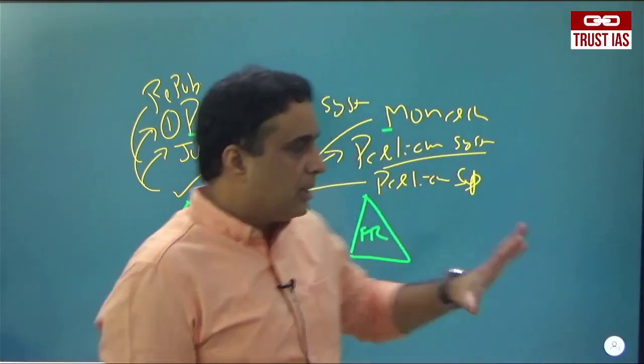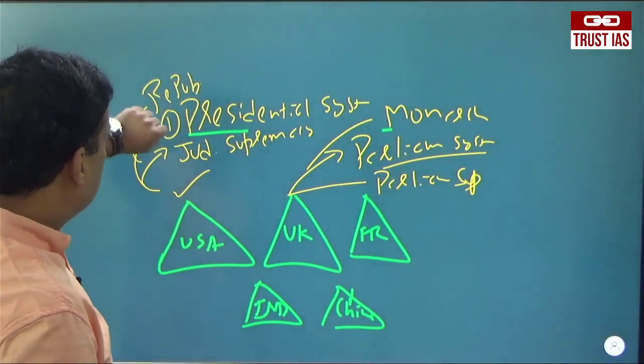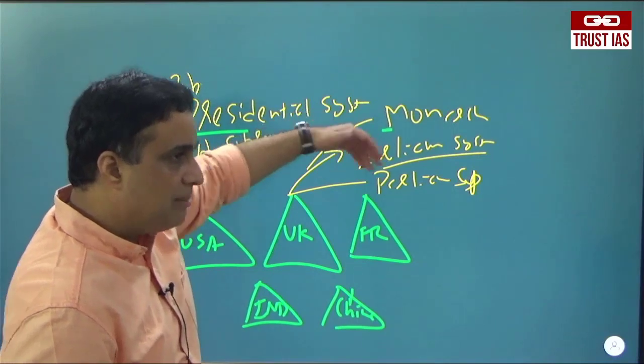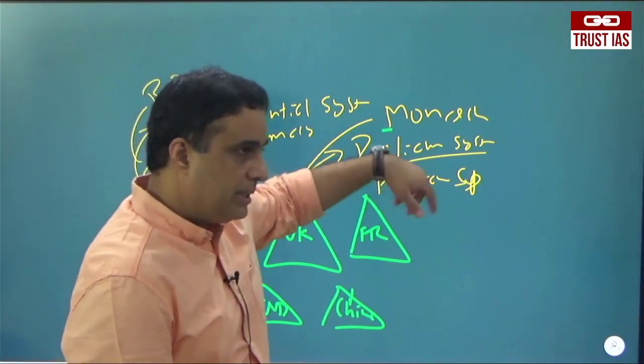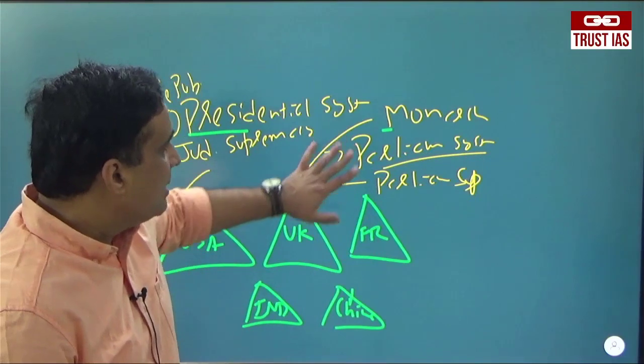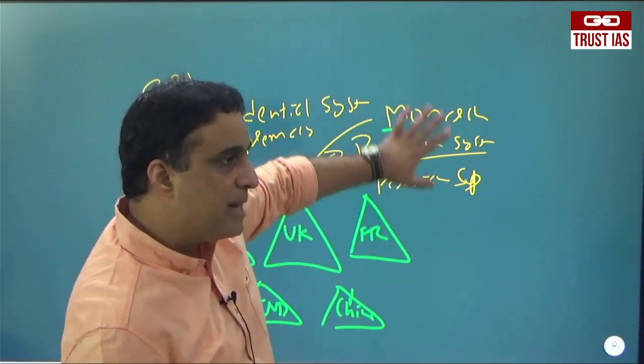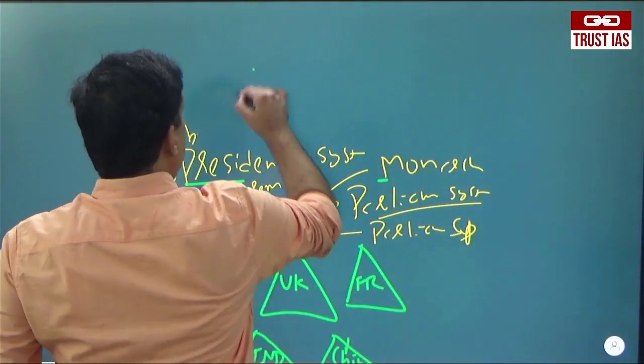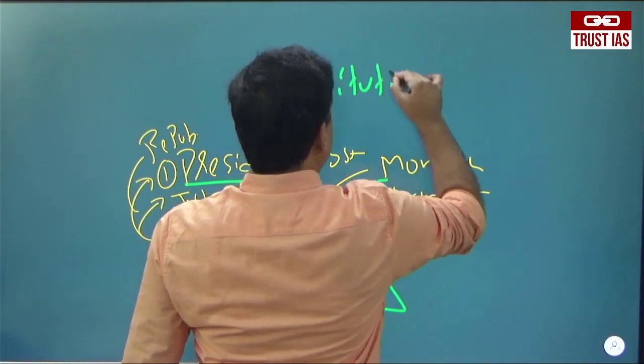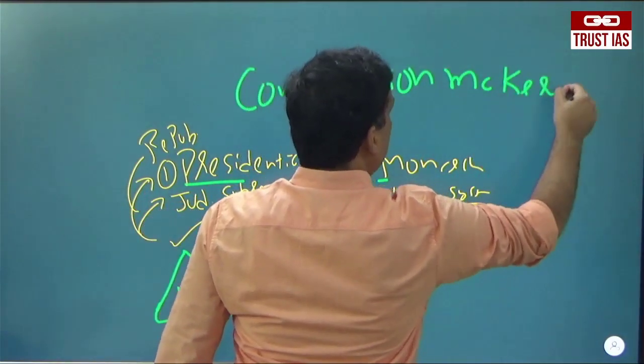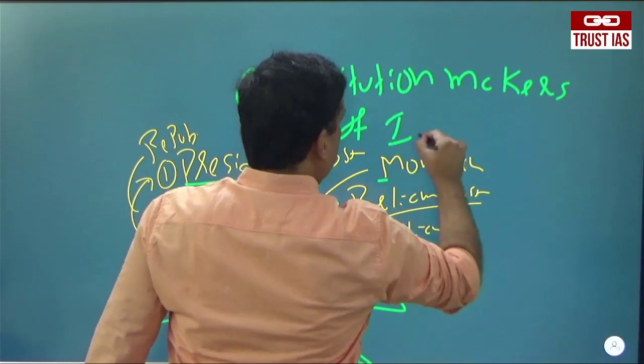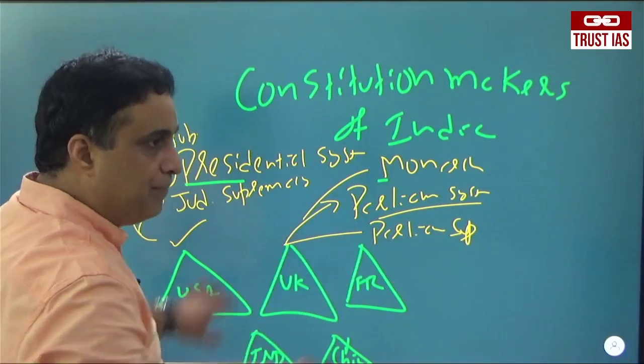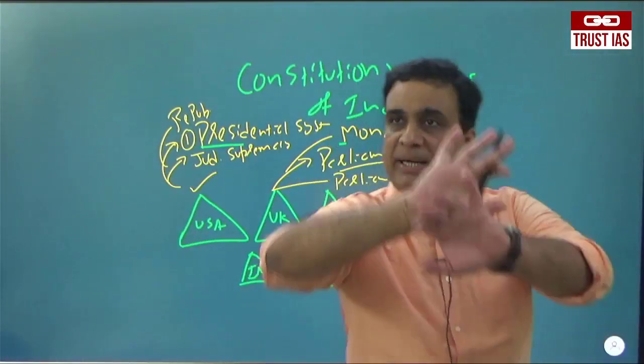Who must have done such kind of comparison? That America is Republic, Presidential, Judicial Supremacy. Britain is Monarchy, Parliamentary System and Parliamentary Supremacy. This comparison was done by the Constitution makers of Indian Constituent Assembly. Founding Fathers of the Constitution. They did the comparison. And they say, look at this board. This Excel sheet. Think about it.